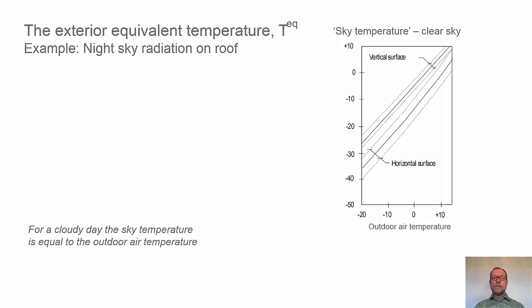The roof will see the surroundings, the clear sky, and this example will have a clear night sky. In the diagram to the right there are measured values, so we can see on the horizontal axis we have the outdoor air temperature going from minus 20 to plus 15 roughly.